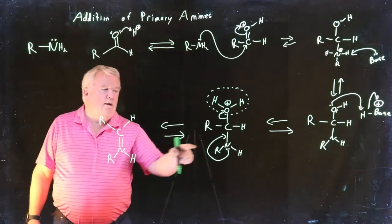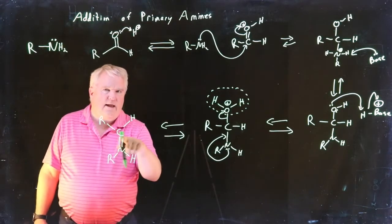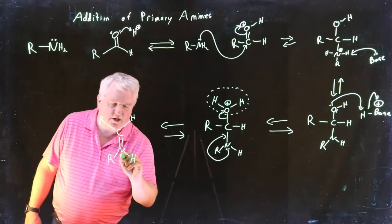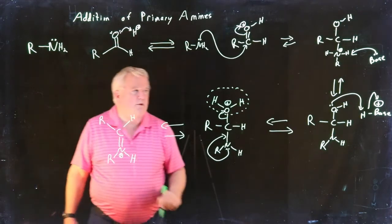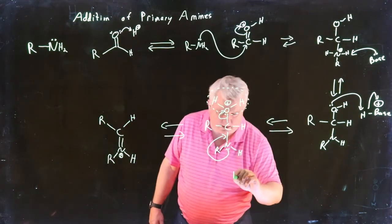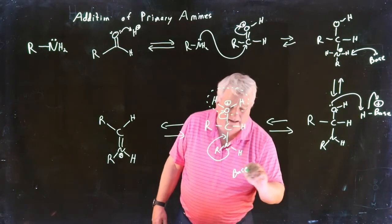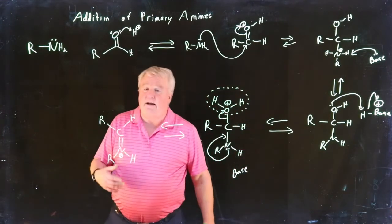Notice now, I have a four valent nitrogen, so I have to put my positive charge there. So, by the way, our base is still around. We don't know what it is. There's lots of things that can act in it. And we're going to need it now.